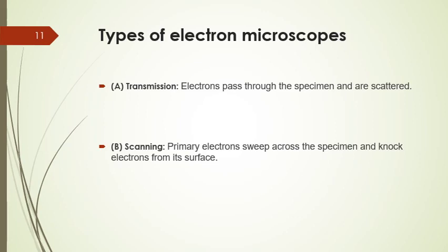So in transmission electron microscopy, after hitting the specimen, the scattered electrons are focused by the magnetic lens on a fluorescent screen to produce an image. In scanning electron microscopy, a primary electron beam hits the specimen surface, and secondary electrons present on the surface are then collected by the collector, amplified, and transmitted to a photographic plate.